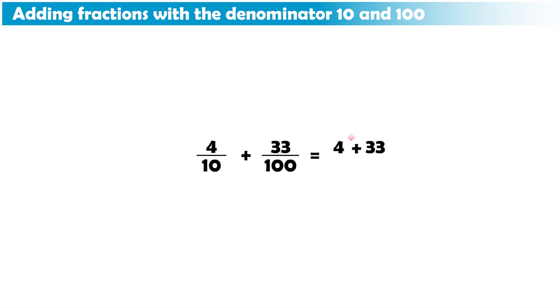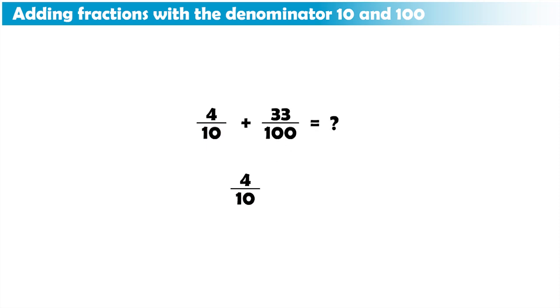Well, we cannot simply add the numerators, because our denominators are different here. But notice that there is an easy way to convert a fraction with denominator 10 to a fraction with denominator 100 by multiplying both numerator and denominator by 10, which means simply adding a 0 to the right of both denominator and numerator.